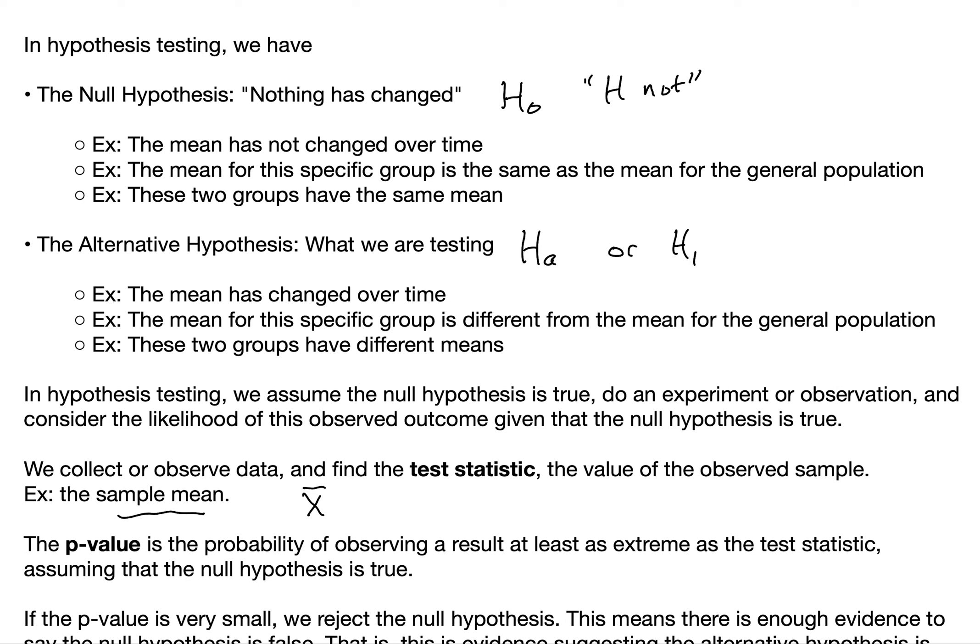In hypothesis testing, we assume that the null hypothesis is true and do an experiment or observation, and consider the likelihood of this observed outcome assuming that the null hypothesis is true. So we collect or observe data and find the test statistic — the value from the observed sample. It could be X-bar, the sample mean, as our test statistic.